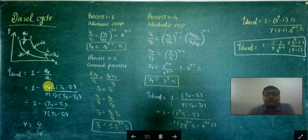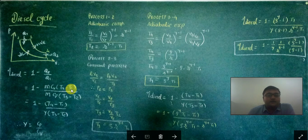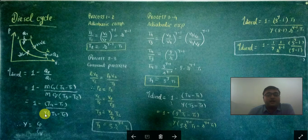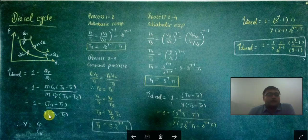Dividing both numerator and denominator by m·cv, the equation becomes: η = 1 − (T4 − T1) / [γ·(T3 − T2)], where cp/cv equals γ, the adiabatic index with a value of 1.4. Now we need to convert T4, T3, and T2 in terms of T1.